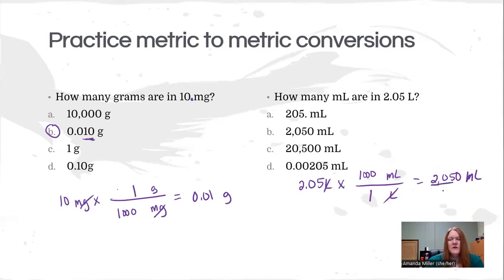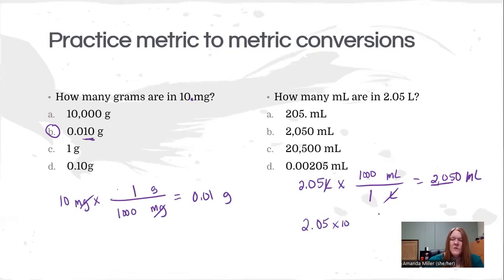I have three significant figures, and this is a situation where it's a bit harder to show what's significant. Zeros between integers are always significant, so as long as I don't put a decimal place after that final zero, I'm showing the right number of sig figs. You can also convert to scientific notation — just remember there cannot be a decimal place after that zero.